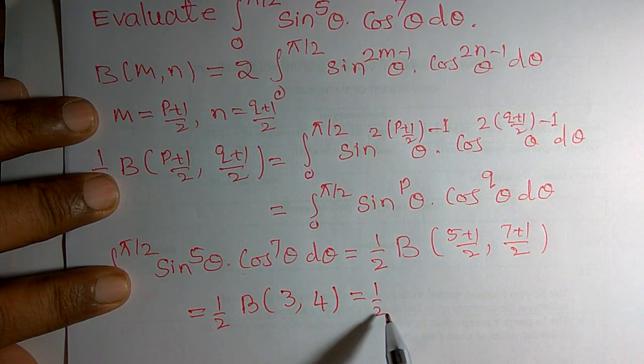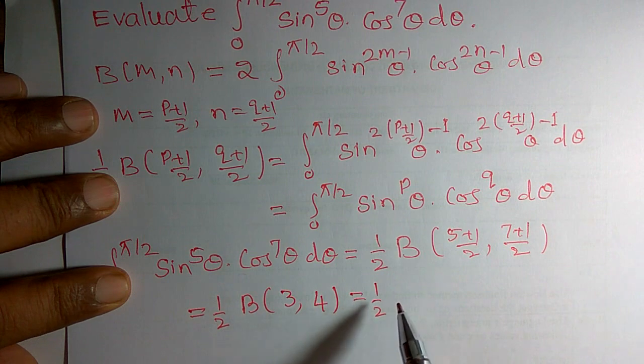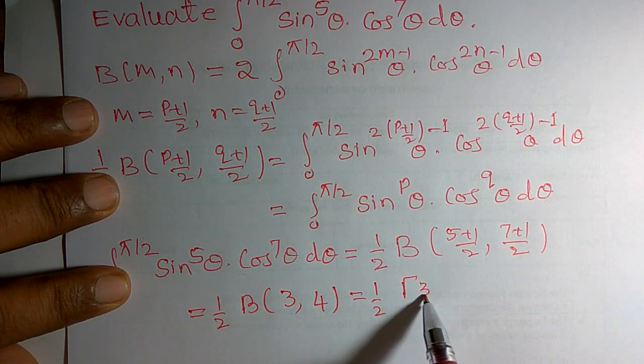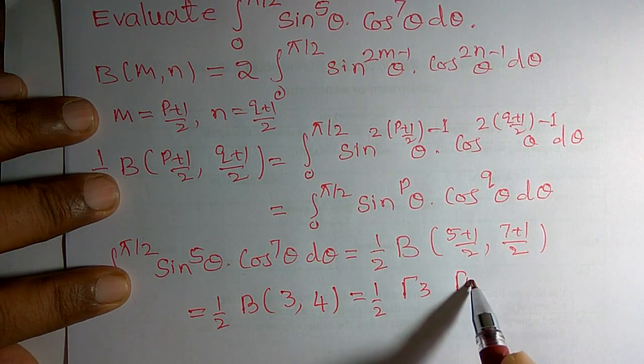So, this can be written as 1 by 2 times beta of m,n equals gamma of 3 and gamma of 4 divided by gamma of 3 plus 4, gamma of 7.